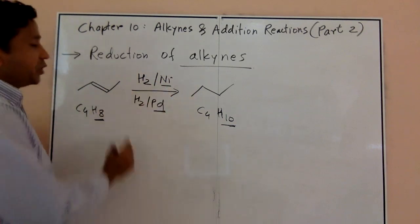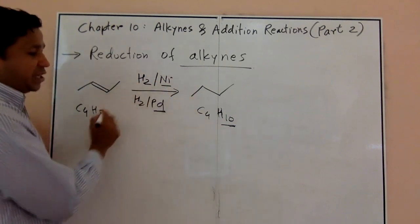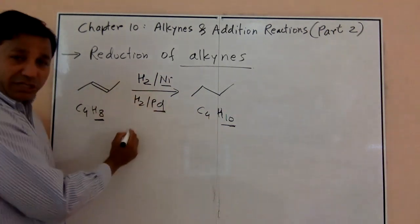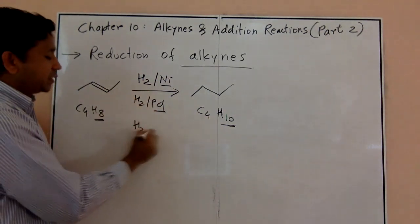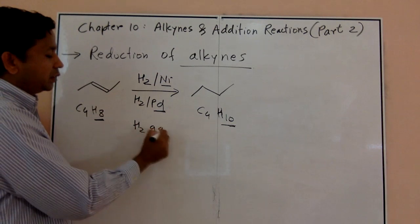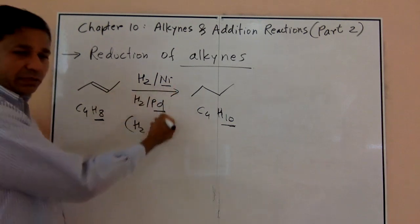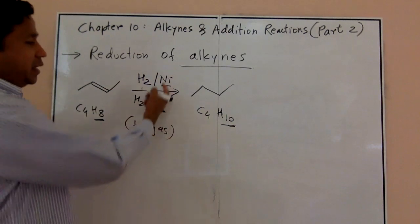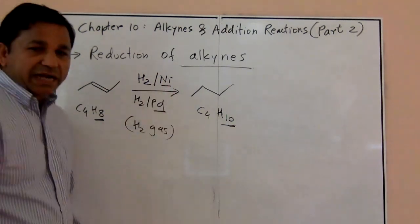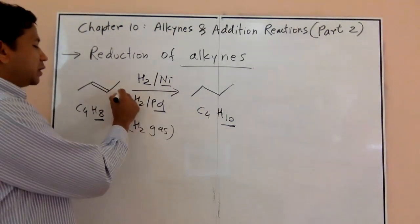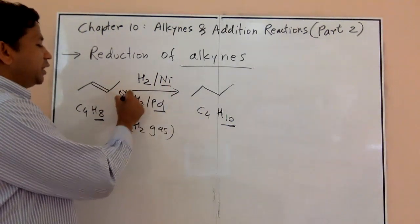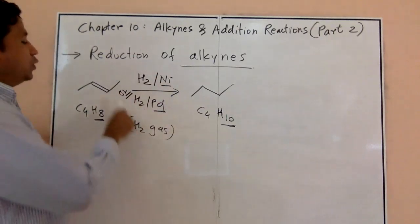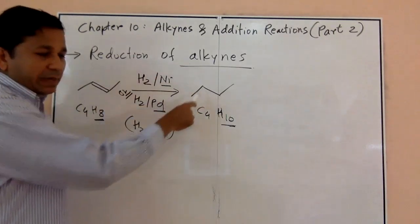The metal acts as a catalyst. You need H2 — hydrogen gas. If you pass H2 gas through your reaction with palladium, platinum, or nickel as a catalyst, that will reduce your double bond to a single bond.